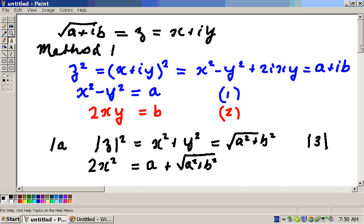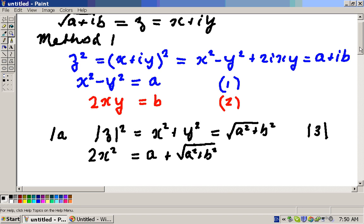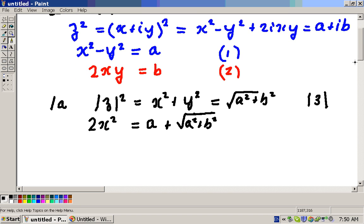And we'll go down the board a bit, then we can divide that by 2 and take the square root to find that X is plus or minus the square root of A plus the square root of A squared plus B squared, divided by 2.